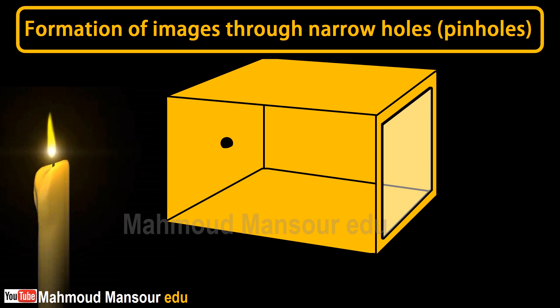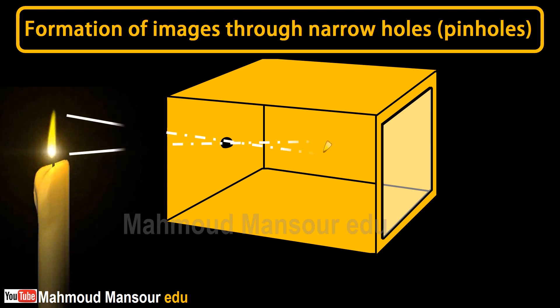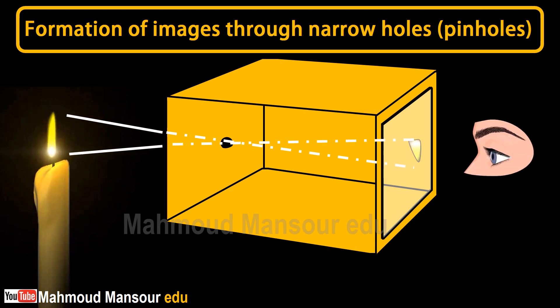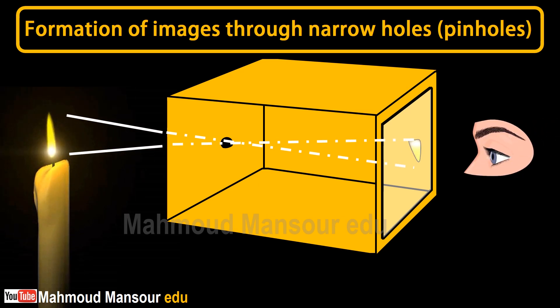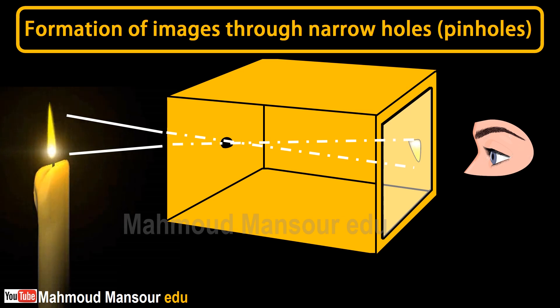Look at the semi-transparent paper. Move the candle forward or backward until you see a clear picture of the candle flame on the semi-transparent paper.